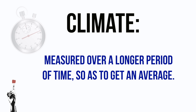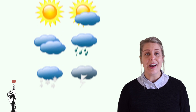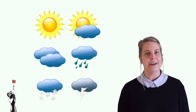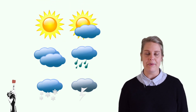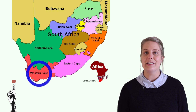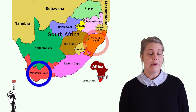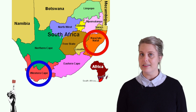Whereas climate is measured over a longer period of time so as to get an average. Because of climate we are able to predict what the weather will be at a certain place at a certain time of year. For example, we know that Cape Town experiences its rainy season during winter, whereas Durban is very hot in summer.